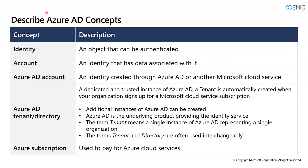Let's look at Azure AD concepts. An identity is an object that can be authenticated — it can be a user with a username and password, but identity also includes applications or other servers that might require authentication through secrets or certificates. An account is an identity that has data associated with it — it may be a username/password or an application/server. You cannot have an account without an identity.